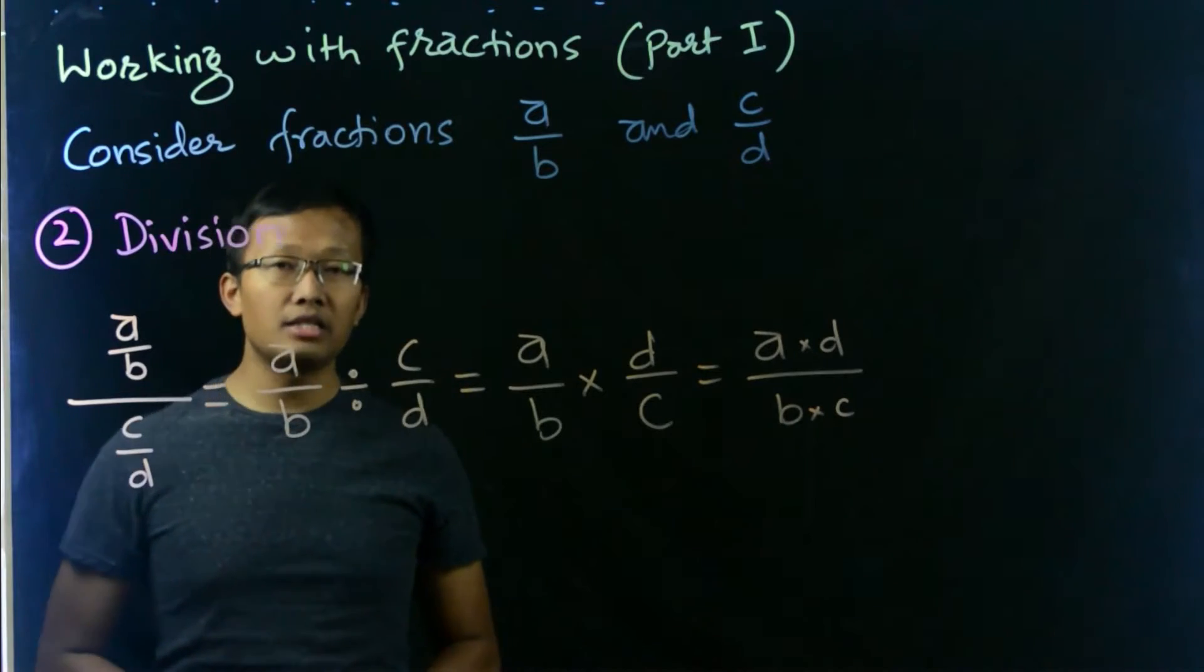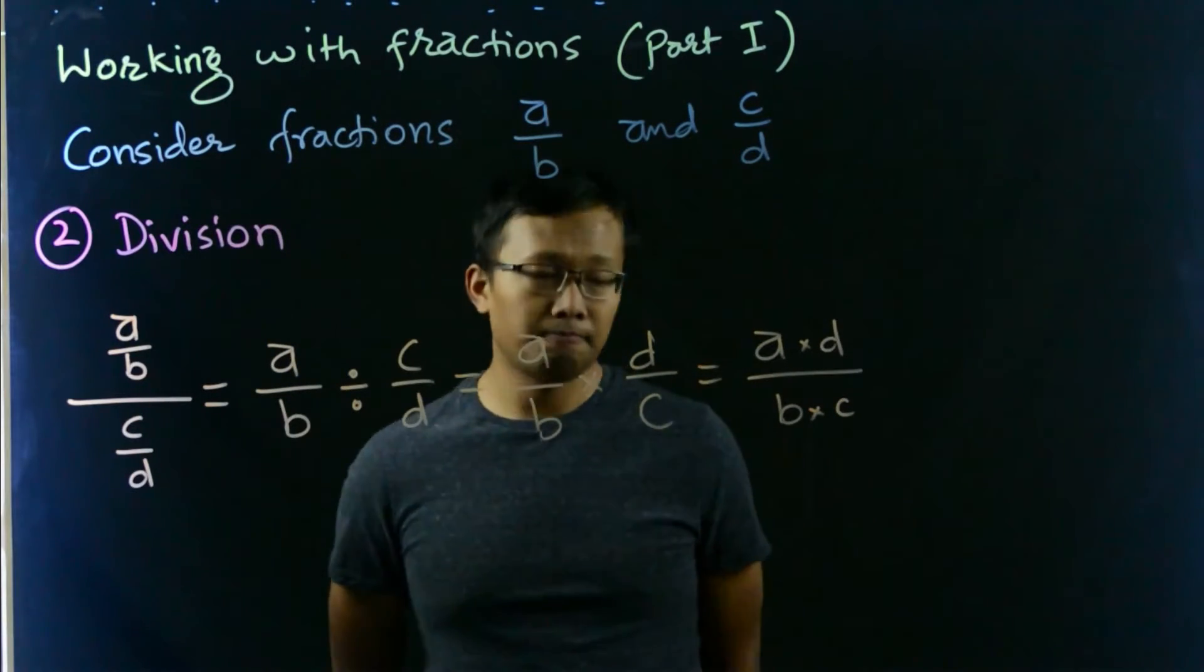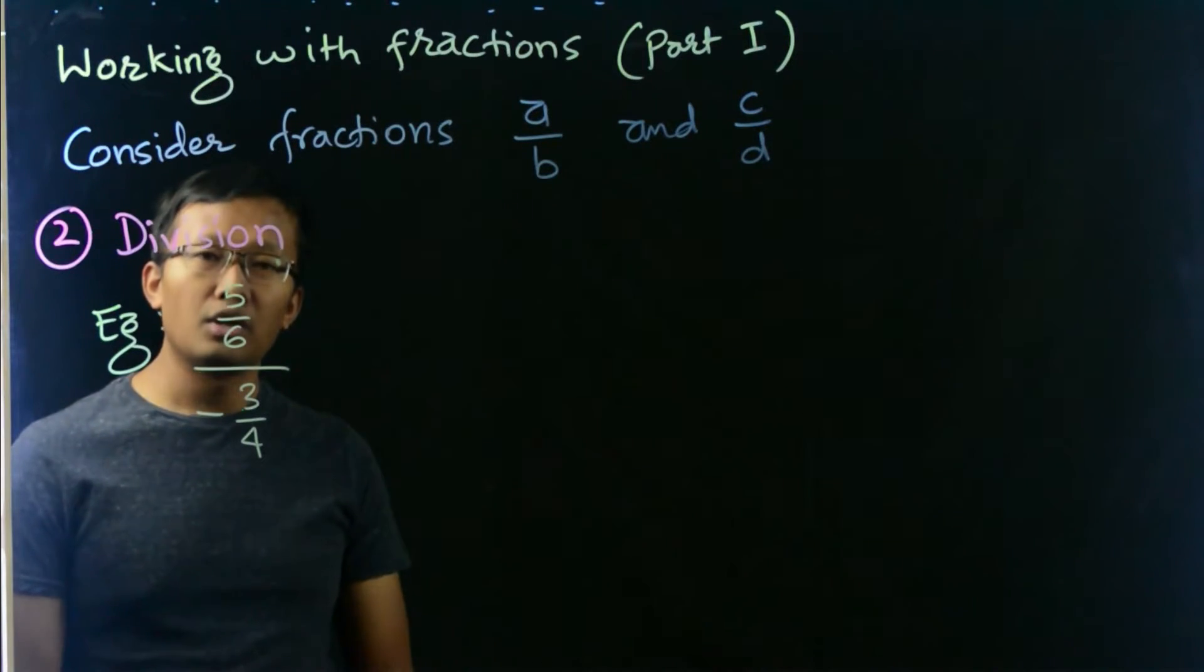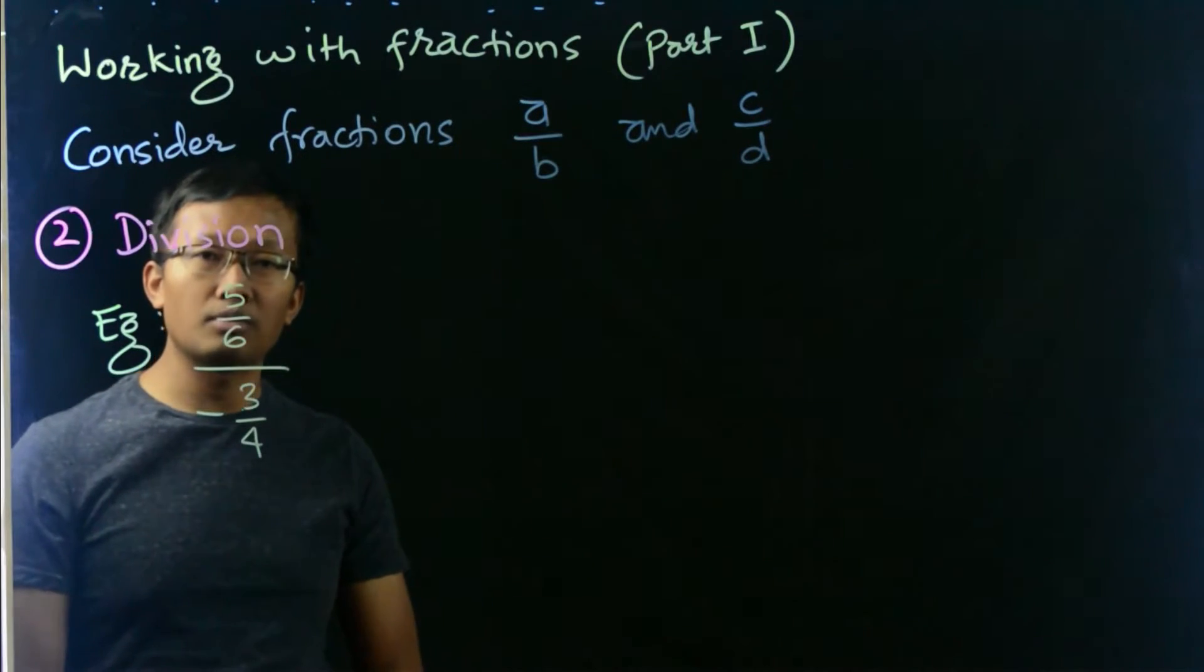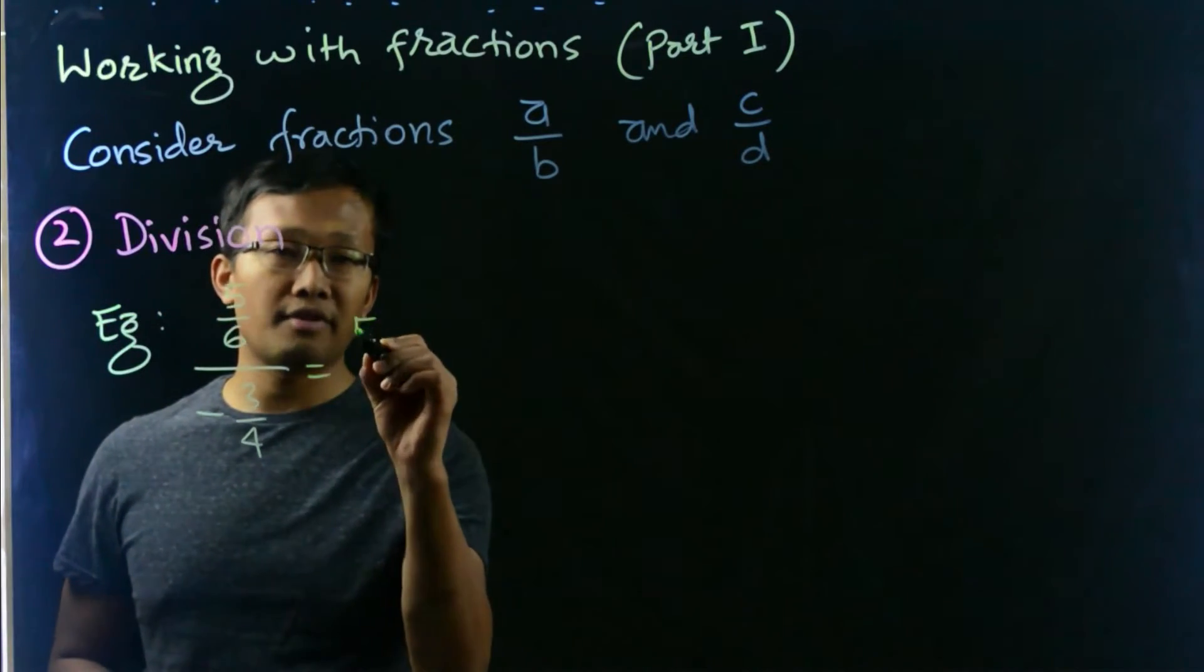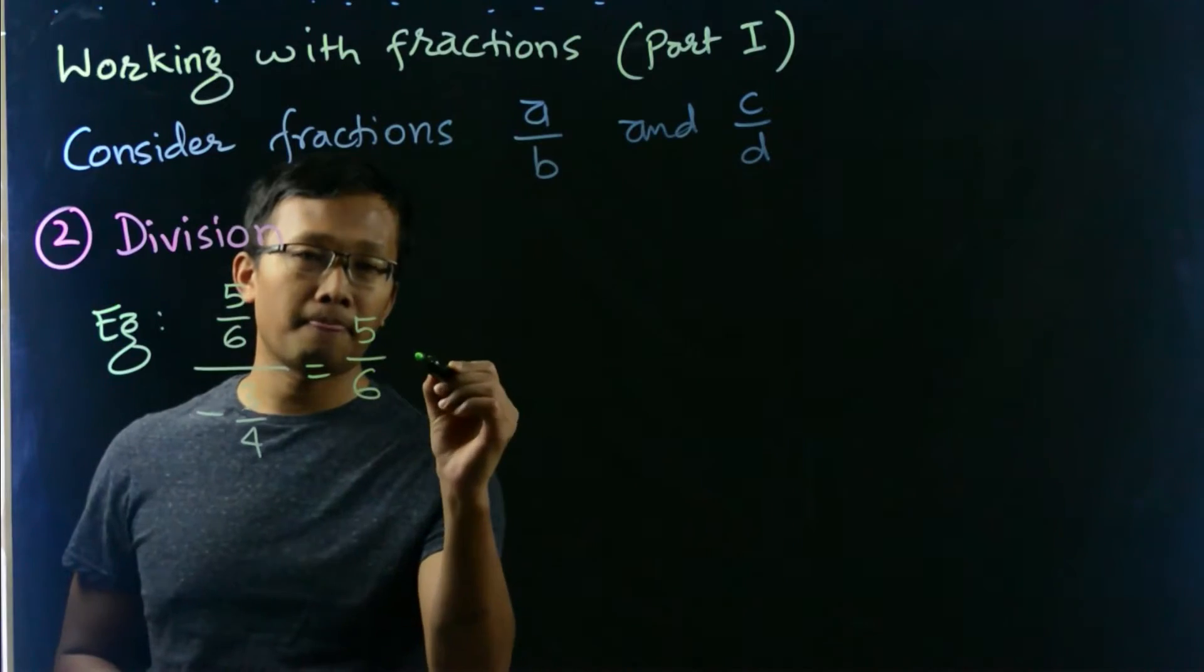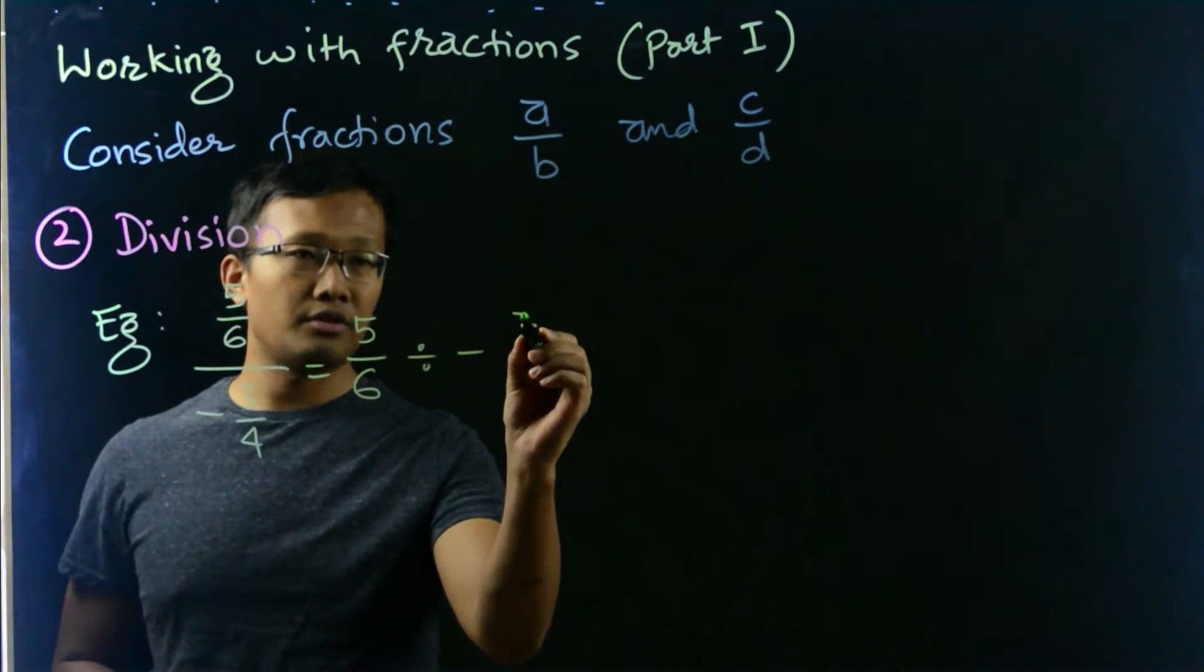So that's the division rule. Now it's time for an example. Let's consider this example: we have 5 by 6 as the top fraction and negative 3 by 4 as our fraction in the denominator. So we can write this as 5 over 6 divided by negative 3 over 4.